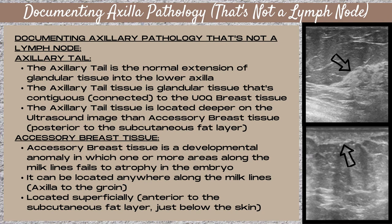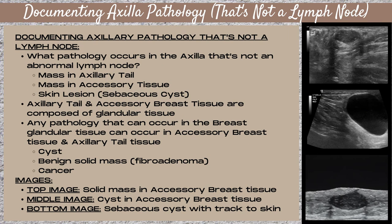Supernumerary nipples — extra nipples — can also occur anywhere along the milk lines. A common site for accessory breast tissue is in the axilla, and sometimes it will even have a nipple associated with it. On ultrasound, accessory breast tissue is located superficially — anterior to the subcutaneous fat layer and just below the skin line. You'll see the skin line, a patch of glandular tissue, and then fat located posterior to it. Pathology in the axilla that isn't an abnormal lymph node includes a mass in the axillary tail tissue, a mass in accessory tissue, or skin lesions such as a sebaceous cyst.